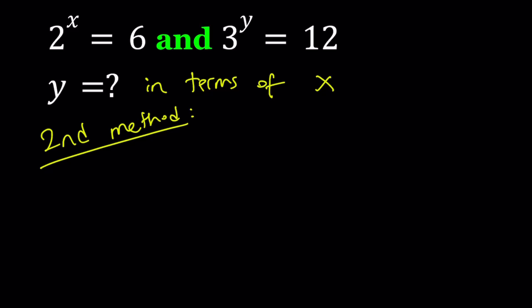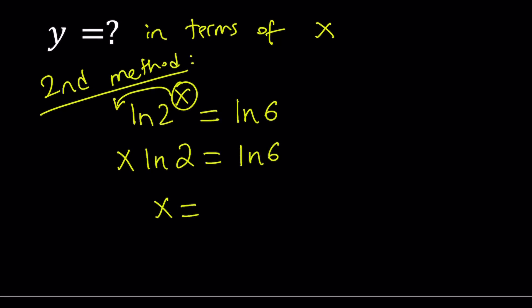I'm going to ln both sides in the first equation. So ln(2^x) = ln(6). And I'm going to bring down the x here. We have a rule for logarithms: x·ln(2) = ln(6). And from here, I can write x as ln(6)/ln(2).